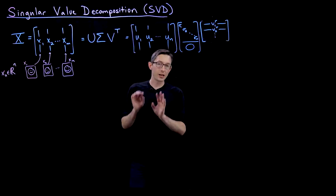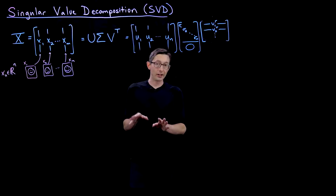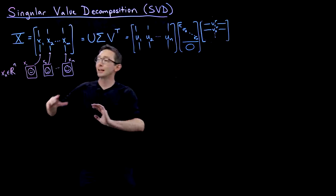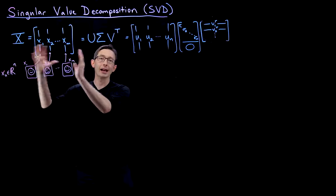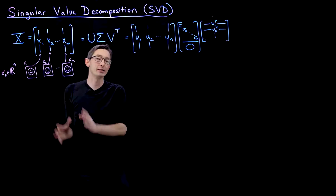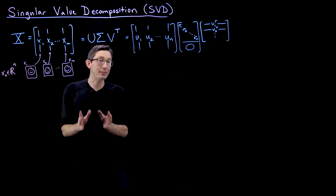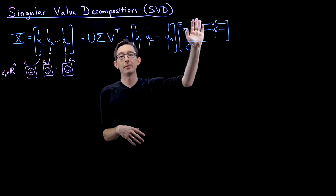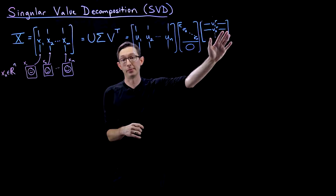Welcome back. We're talking about the singular value decomposition — how you can take a data matrix X and write it as the product of three matrices: U, sigma, and V transpose.